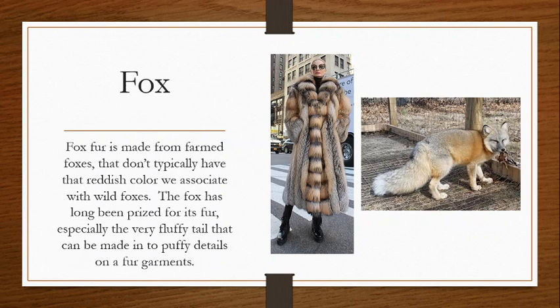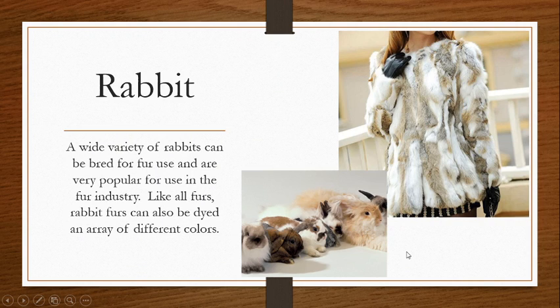Fox fur is typically made from farmed foxes that don't have the reddish color we associate with wild foxes. The fox has long been prized for its fur, especially its very fluffy tail that can be made into puffy details on fur garments. Rabbit fur comes from a wide variety of rabbits and is very popular in the fur industry — likely the majority of natural animal furs we commonly see are actually from rabbits. Rabbit furs can also be dyed in a variety of colors.